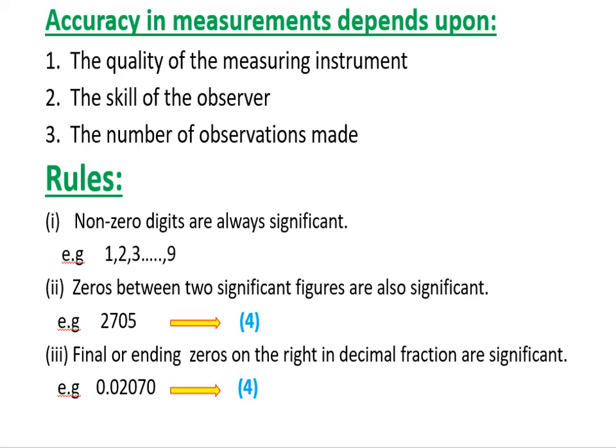Accuracy in measurements depends on three things. First, the quality of the measuring instrument — a good and accurate instrument is very important; laboratory instruments are sensitive. Second, the skill of the observer — who is experimenting, their skills and experience. Third, the number of observations made — the more times you observe and repeat measurements, the more accurate they will be.